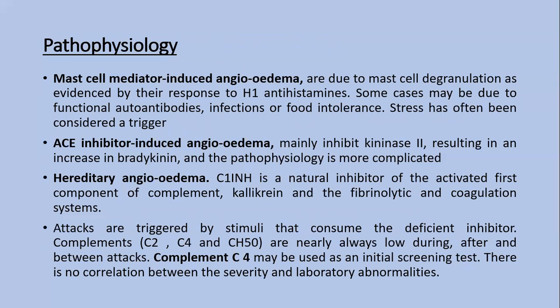ACE inhibitor-induced angioedema mainly inhibits kinase 2, resulting in an increase in bradykinin. In hereditary angioedema, C1 inhibitor is a natural inhibitor of activated first component of complement, including kallikrein and the fibrolytic and coagulation systems. Attacks are triggered by stimuli that consume the deficient inhibitor. Complement C2, C4, and CH50 are nearly always low during, after, and between attacks. Complement C4 may be used as an initial screening test, though there is no correlation between disease severity and the degree of complement reduction.